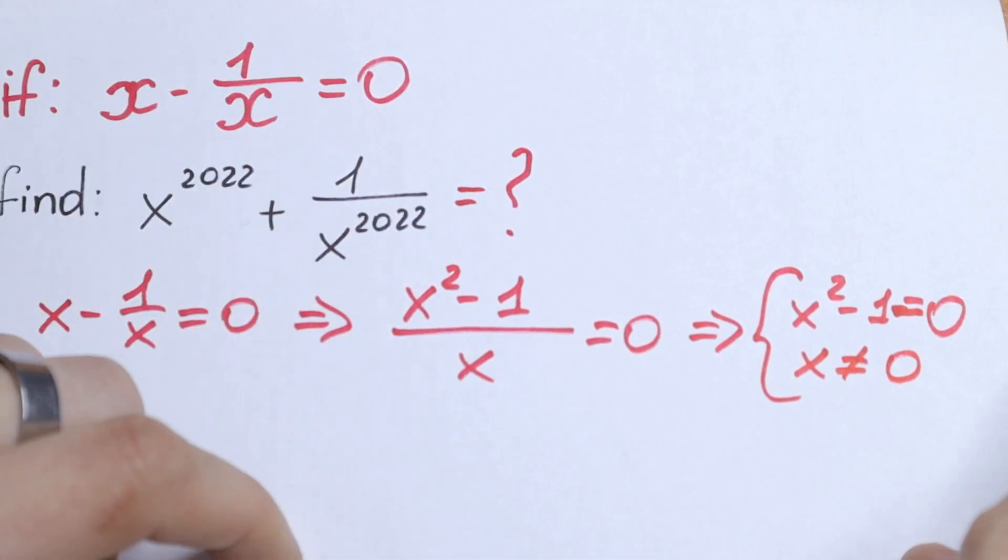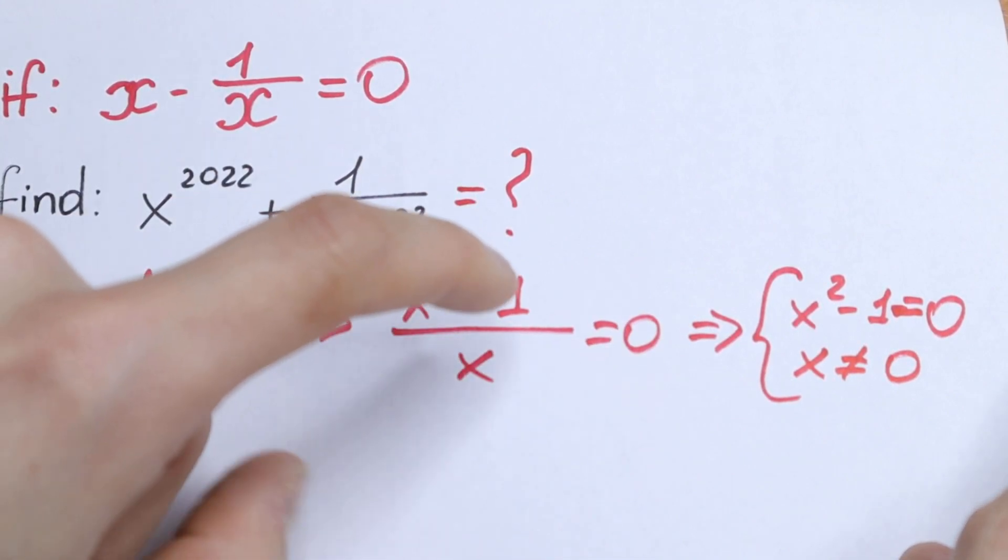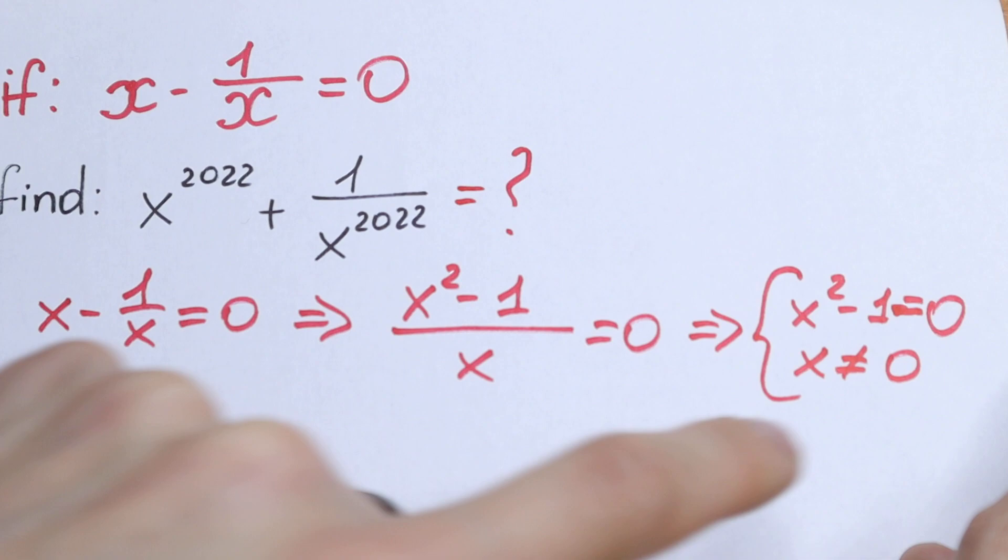This is a classic solution of a fraction. So if fraction equal to 0, then numerator equal to 0, and denominator is not equal to 0.